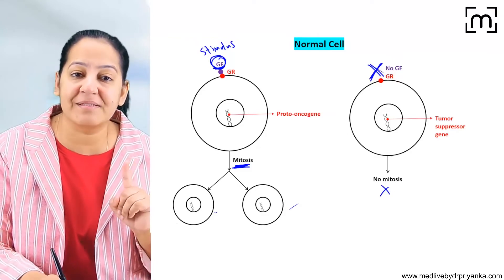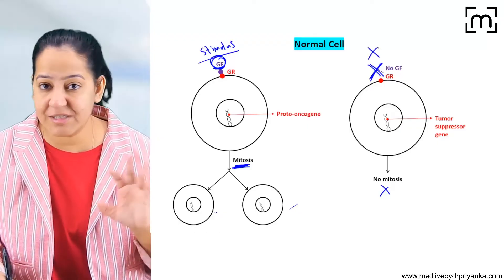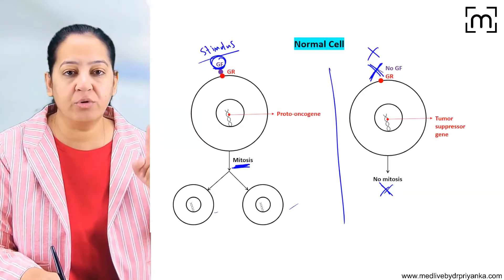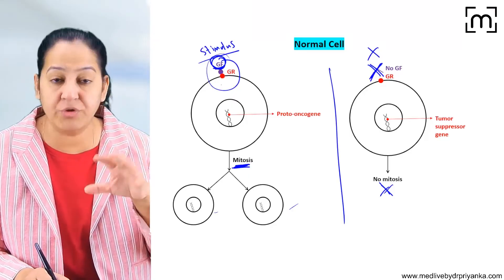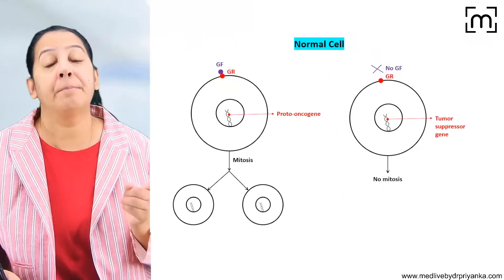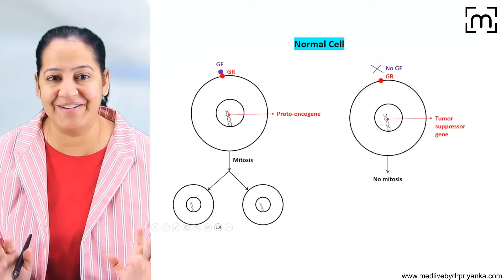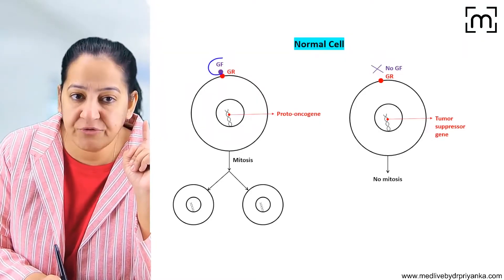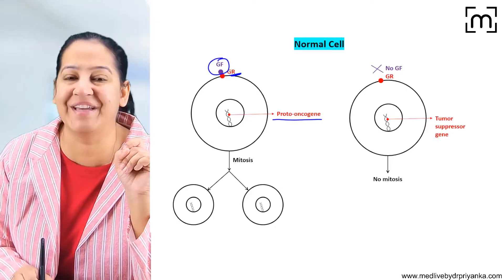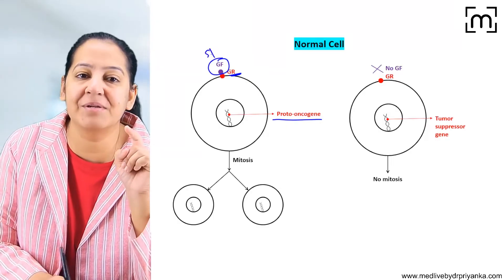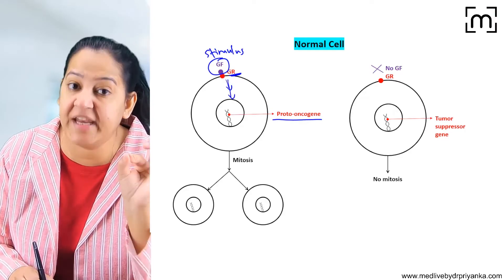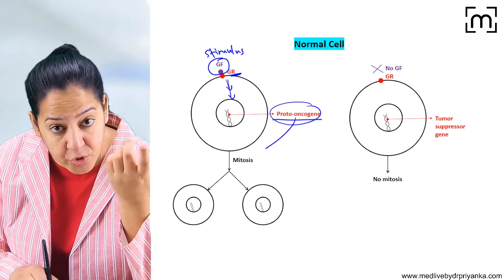Whenever the physiological stimulus is coming, only then does cell division take place; when it is absent, cell division does not take place. How does the cell know at the genetic level? When the growth factor binds with the growth receptor, there is a gene inside the cell called proto-oncogene that gets stimulated. As soon as the stimulus comes and binds with the growth receptor, it gives a signal, and because of that signal the proto-oncogene gets stimulated and causes mitosis.